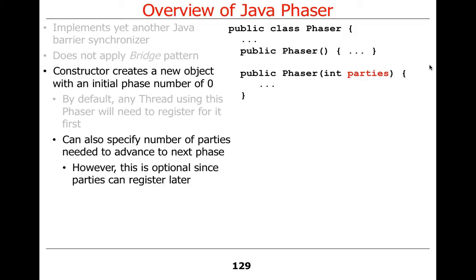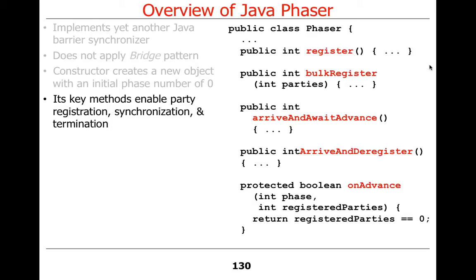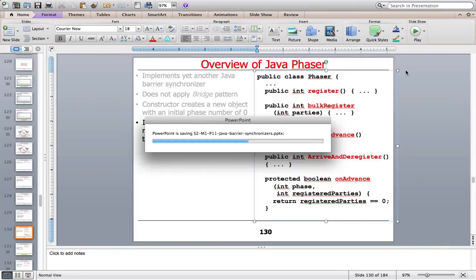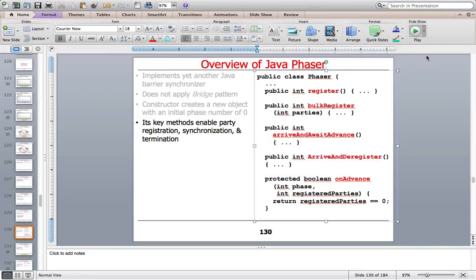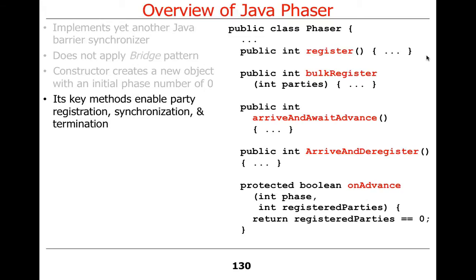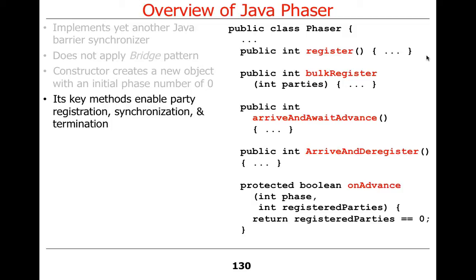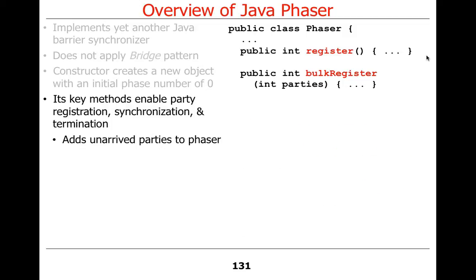There are a whole bunch of methods — the phaser has a lot more than the earlier two mechanisms. Things like countdown latch and cyclic barrier had just a handful of methods, like a wait, countdown, or wait-and-reset — very simple interfaces. In contrast, the phaser has a lot more, and I didn't even show half the methods. The methods enable parties to register, synchronize, and terminate, and we'll talk about each of those in turn.